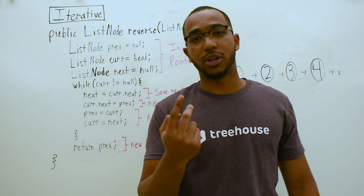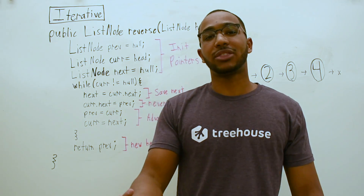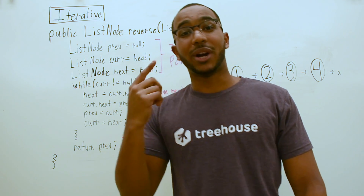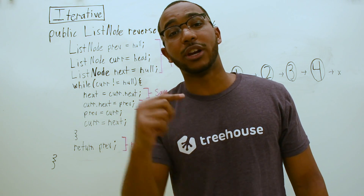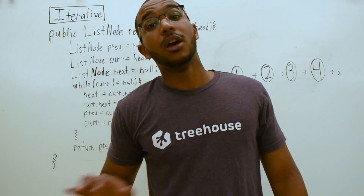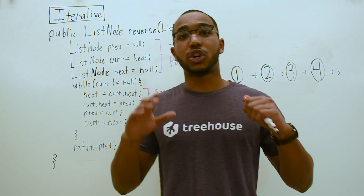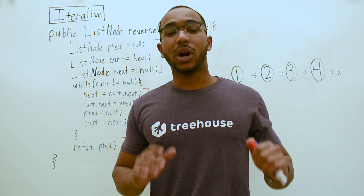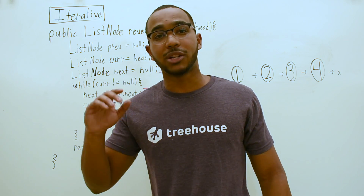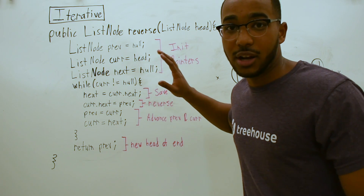We need two fundamental pointers. We need a previous pointer because when you have a singly linked list you can't get the node before you, so we need to remember that during our iteration. We're going to have a previous pointer, a current pointer to track where we're at, and then we need to stash a next pointer — because if we change current's next value, we're going to lose our next pointer in the iteration and not know where to go next. So while current is not null...